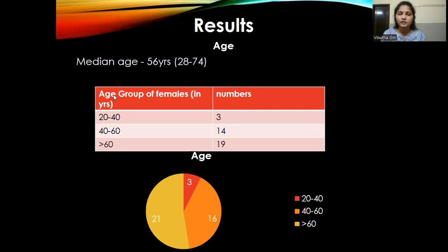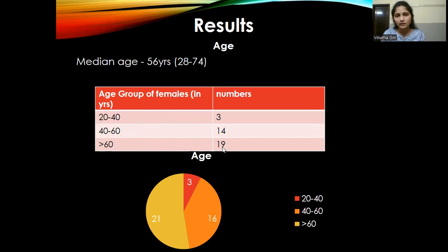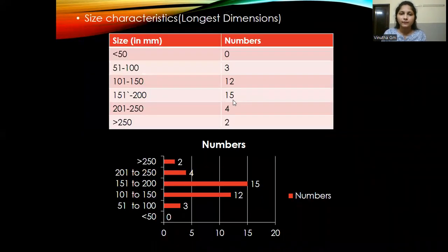Regarding results, the patients were divided into age groups: 20 to 40 years, 40 to 60 years, and more than 60 years. The majority of patients were aged more than 60 years, with 19 patients in that group. Ovarian tumors were categorized into two types: benign tumors, of which there were 21, and malignant tumors, of which there were 15. According to size, the majority of tumors were between 10 to 20 centimeters, and a few exceeded 25 centimeters.